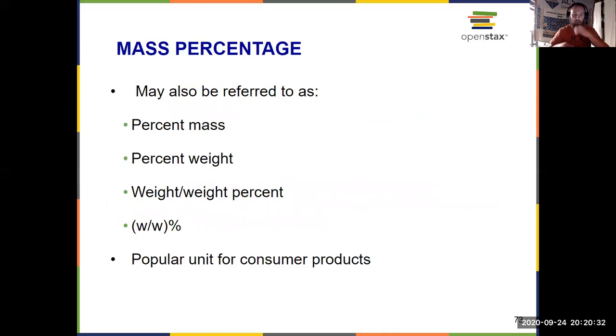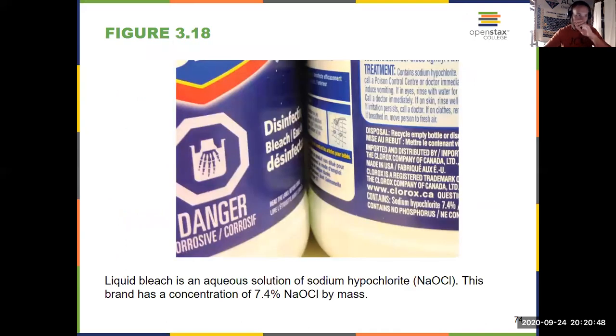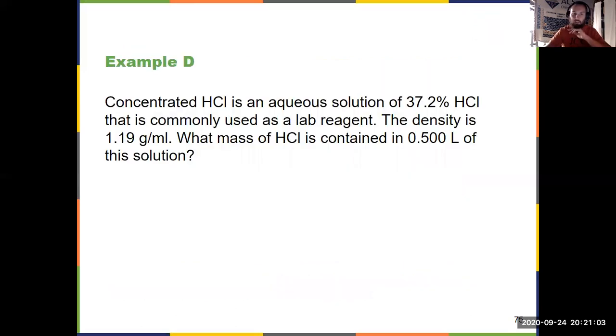You already heard me use percent mass, mass percentage, percent mass, percent weight, weight percent, WW percent, all mean the same thing. Mass over mass times 100, part over whole times 100. Where do you see that most commonly? Consumer products. We look at bleach, for example, if you look on the side it'll say 7.4% sodium hypochlorite. That happens to be a percentage by mass. And you'll see this a handful of times throughout the semester.